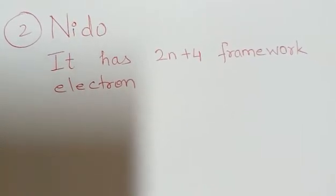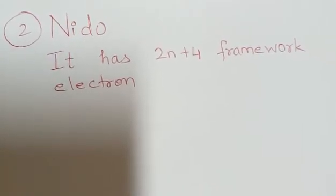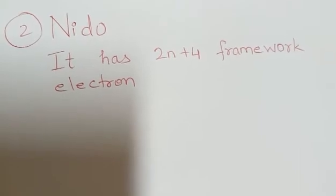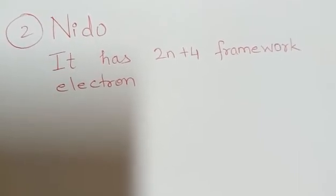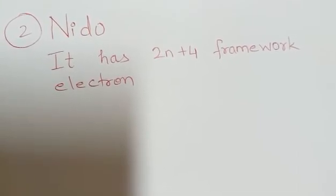The next structure that we learn is Nido. Nido is just an extension of Closo. It has 2n plus 4 framework electrons.